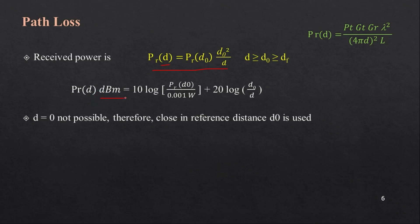Writing the received power equation in logarithmic form, Pr(d) in dBm equals 10 log[Pr(d0) / 0.001 W] plus 20 log[d0 / d]. This is how we can calculate the received power at a particular distance. I hope this lecture is helpful to you — thank you so much for watching.